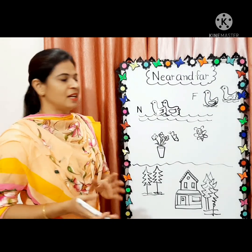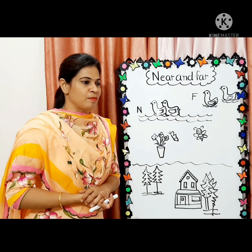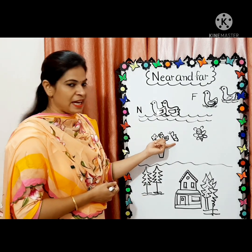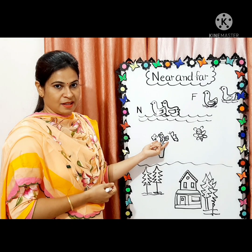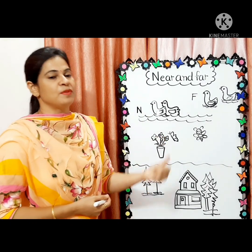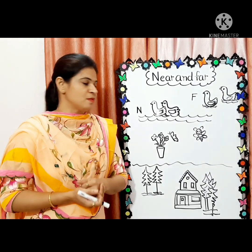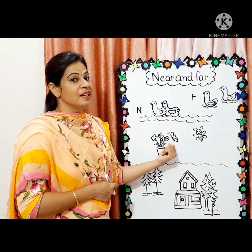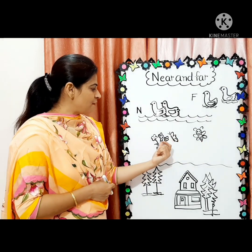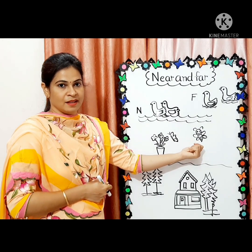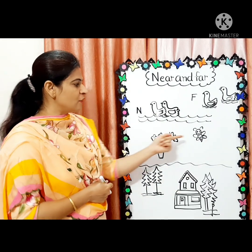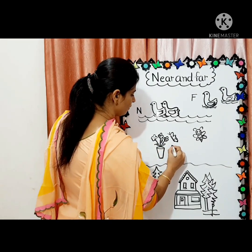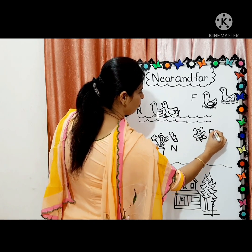This is a simple concept, there is nothing much to understand — आपको आसानी से समझ में आ जाएगा। Next picture देखिए — एक flower pot की picture है। उसमें देखिए जो butterfly है वो flower के near है। और जो honey bee है वो flower से far है — दूर है। Butterfly flower के near है, honey bee flower से far है। We will write N for near and F for far.